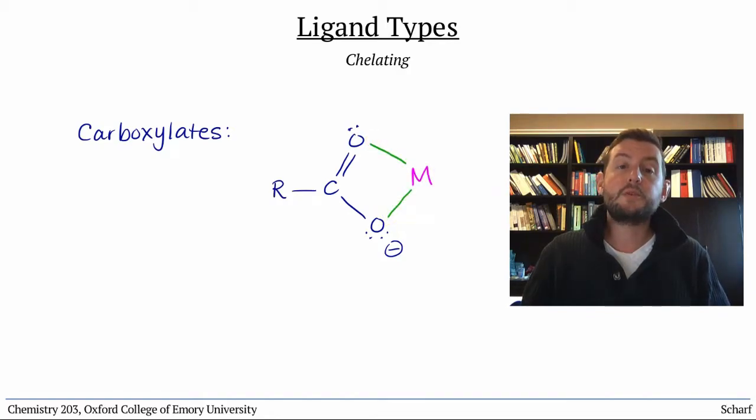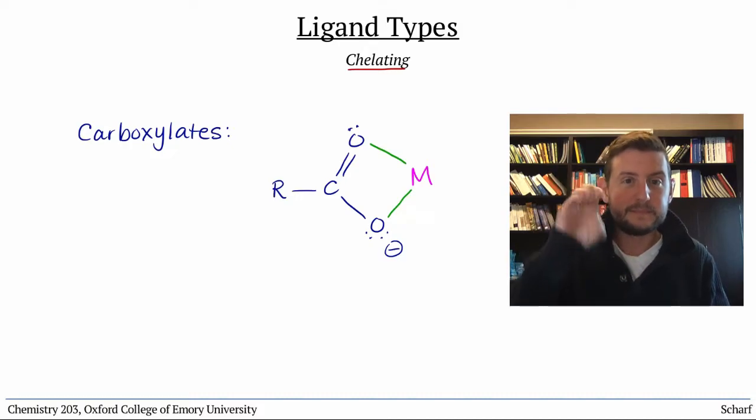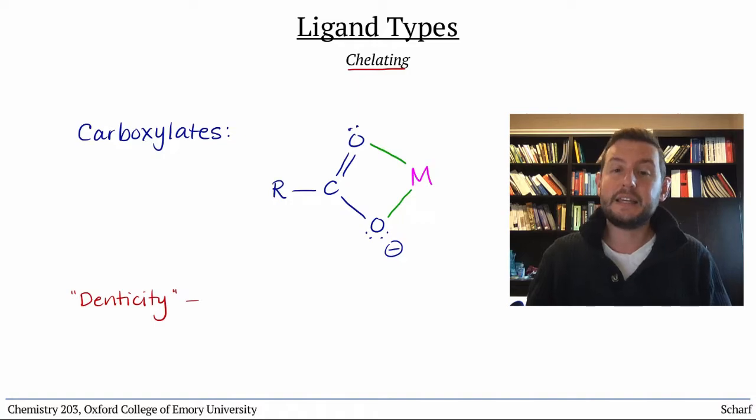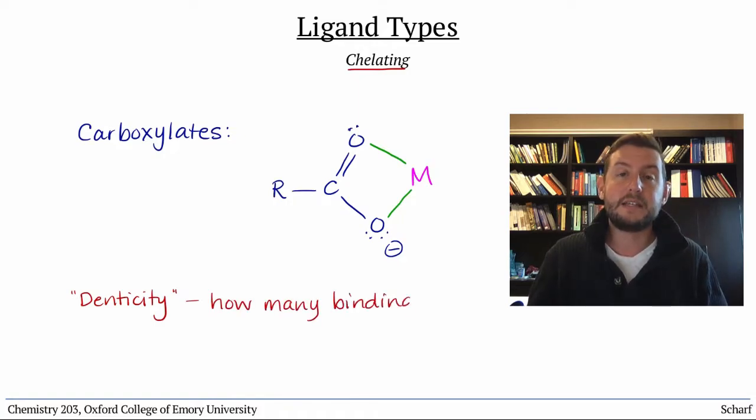Ligands of this sort, which bind through multiple different sites, are called chelating ligands, from the Greek chele, for claw. The denticity of a chelating ligand refers to how many different binding sites it has.